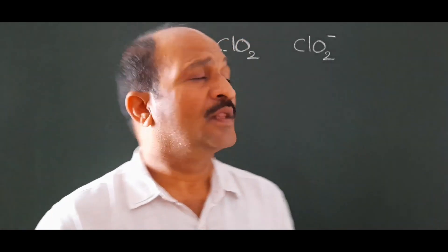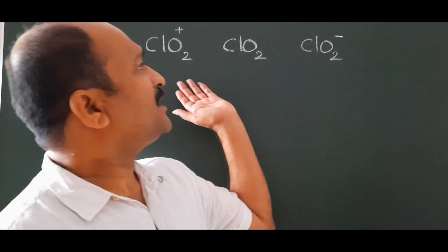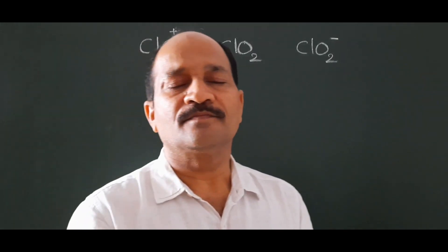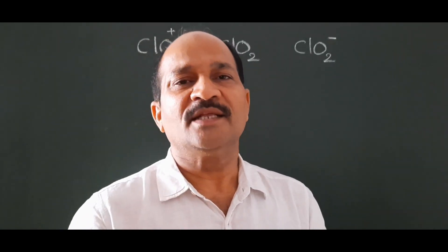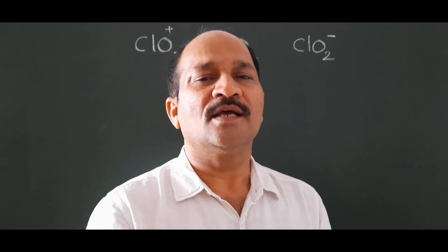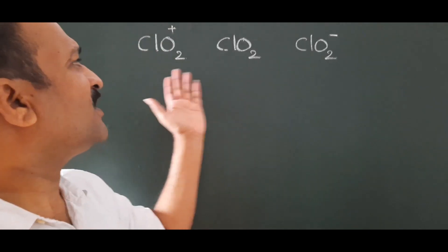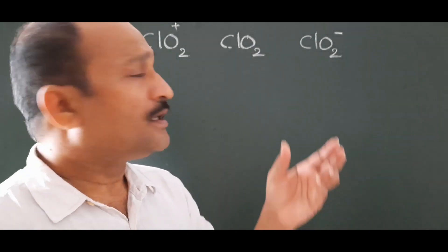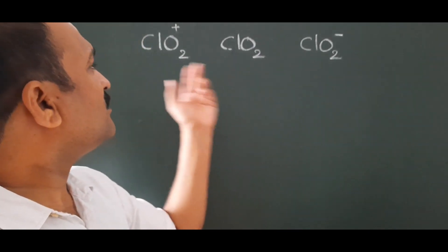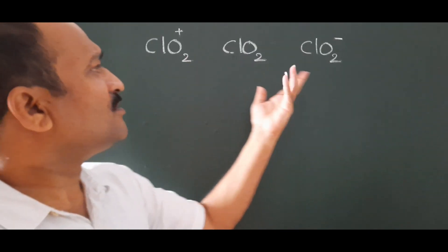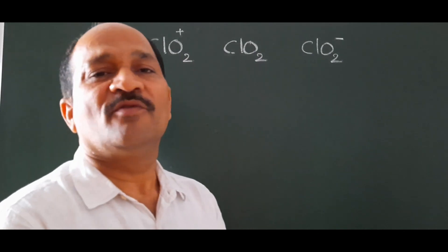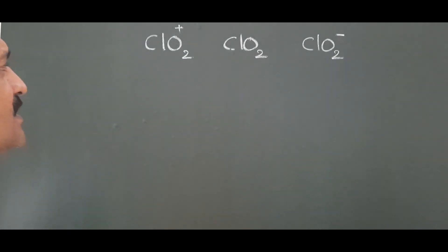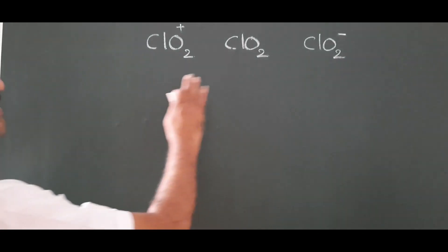Hi students, I am taking three chlorine molecules and comparing the bond angles — how to predict the bond angles of different molecules where all the molecules have the same type of atoms.